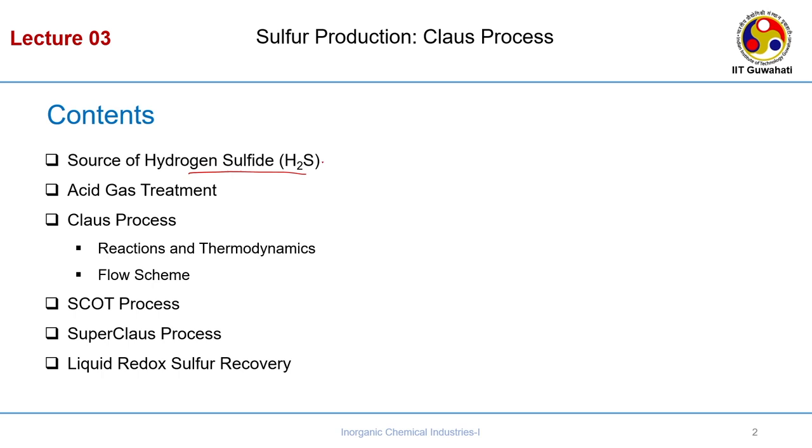We have seen the source is sulphur dioxide, and the source of sulphur dioxide is from elemental sulphur which is not always directly available. So what we do is we produce it through hydrogen sulphide. Hydrogen sulphide is a common off-gas or by-product of several processes. Today's lecture will mainly focus on sulphur production through the Claus process. From hydrogen sulphide we produce elemental sulphur.